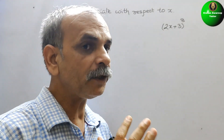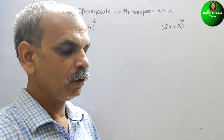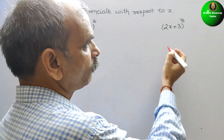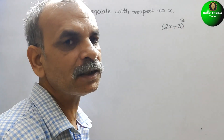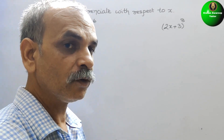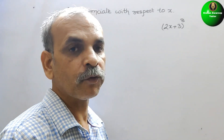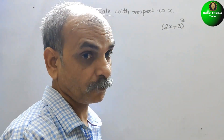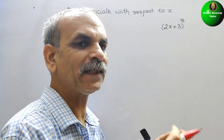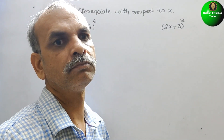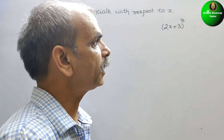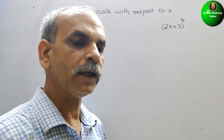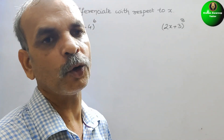Here we will differentiate — this is the first term, second term, meaning it will go from minimum first term to many terms. So here they have given a binomial. Here we will go for our chain rule.